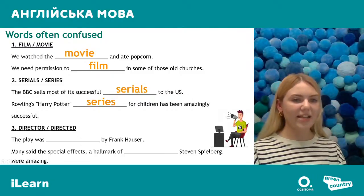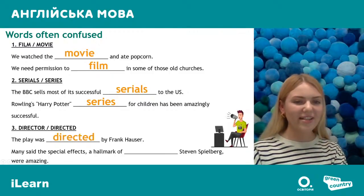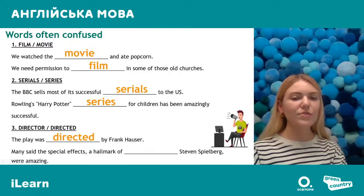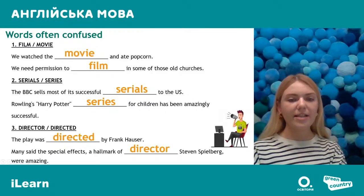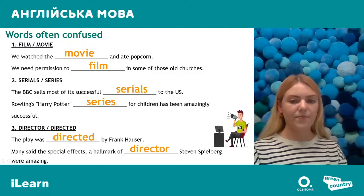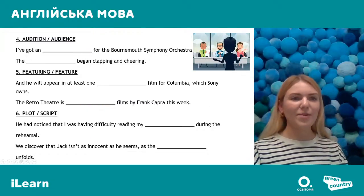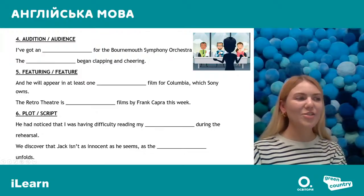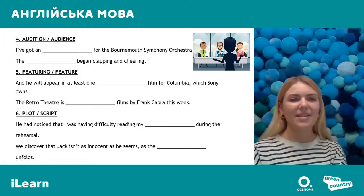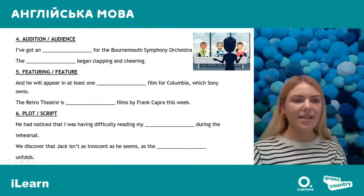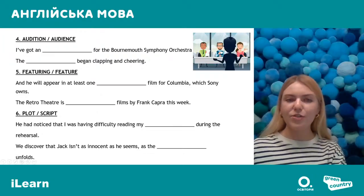Number three: 'director' and 'directed'. 'The play was directed by Frank Hauser' — directed here means спродюсовано/поставлено. In number two, Steven Spielberg is 'the director' — режисер. Number four: 'audition' and 'audience'. These words look very similar but have absolutely different meanings. Which sentence uses 'audition' and which uses 'audience'?